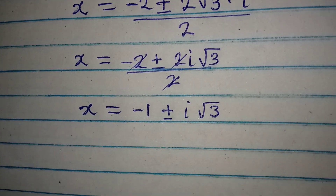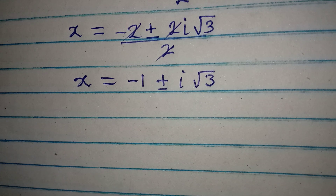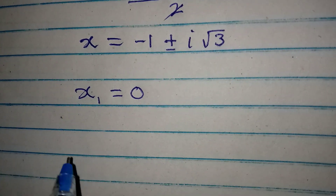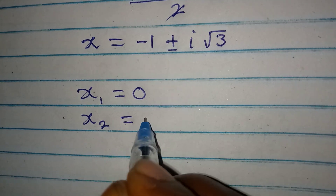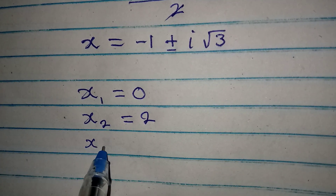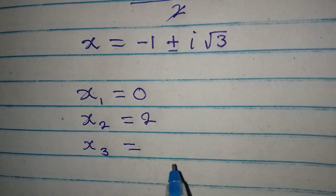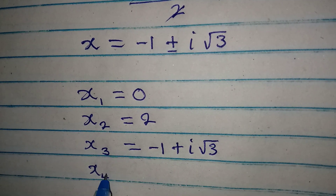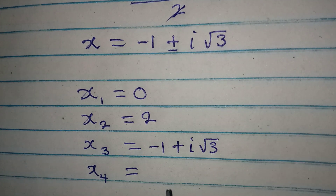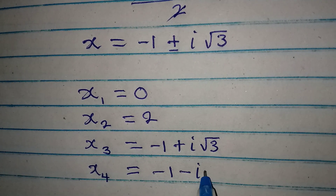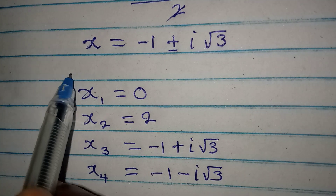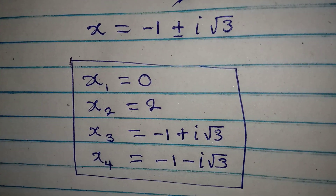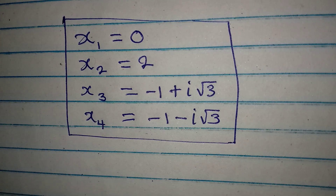Let's bring the four solutions together. x₁ equals 0, x₂ equals 2, x₃ equals minus 1 plus i root 3, and x₄ equals minus 1 minus i root 3. These are the four solutions for the equation. Thank you for watching, and do share this with your friends.